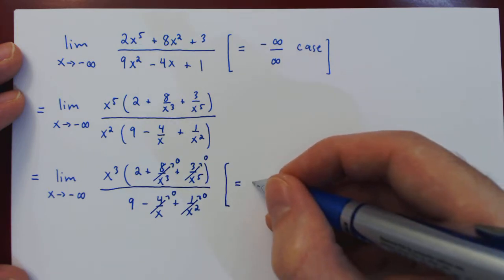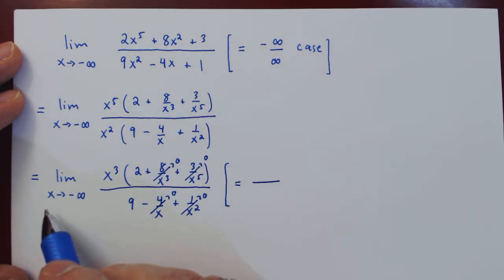So if we focus now first on the denominator, as x approaches negative infinity, this expression gets closer and closer to 9.